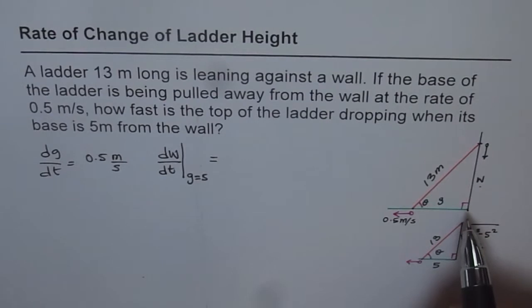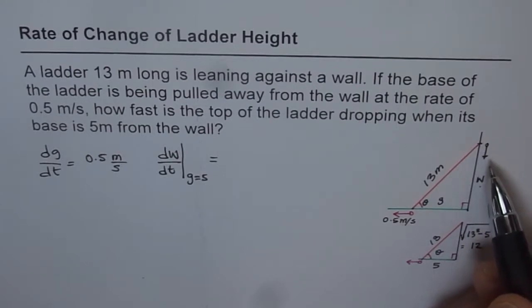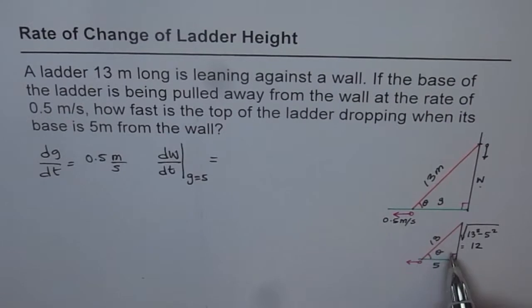Now, what we do in such examples is we make a similar triangle. This is a general situation where the ladder is falling, but this is the specific instance when we want to find all the parameters. At the instance when the base of the ladder is 5 meters, what is the situation? This is what it represents.